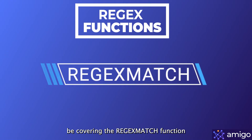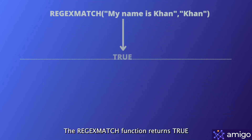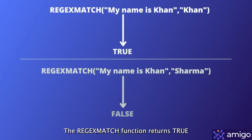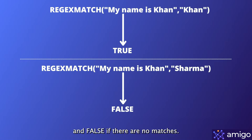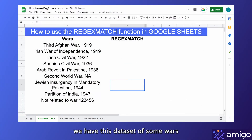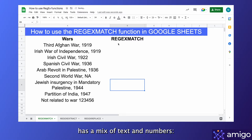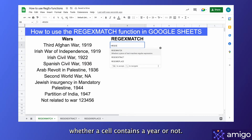We'll be covering the REGEXMATCH function in this video. Let's understand how this function works using an example. The REGEXMATCH function returns true if it matches the pattern you provide anywhere in the text, and false if there are no matches. For example, suppose we have a dataset of some wars in the last century where each row has a mix of text and numbers. Let's create a simple REGEXMATCH to test whether a cell contains a year or not.